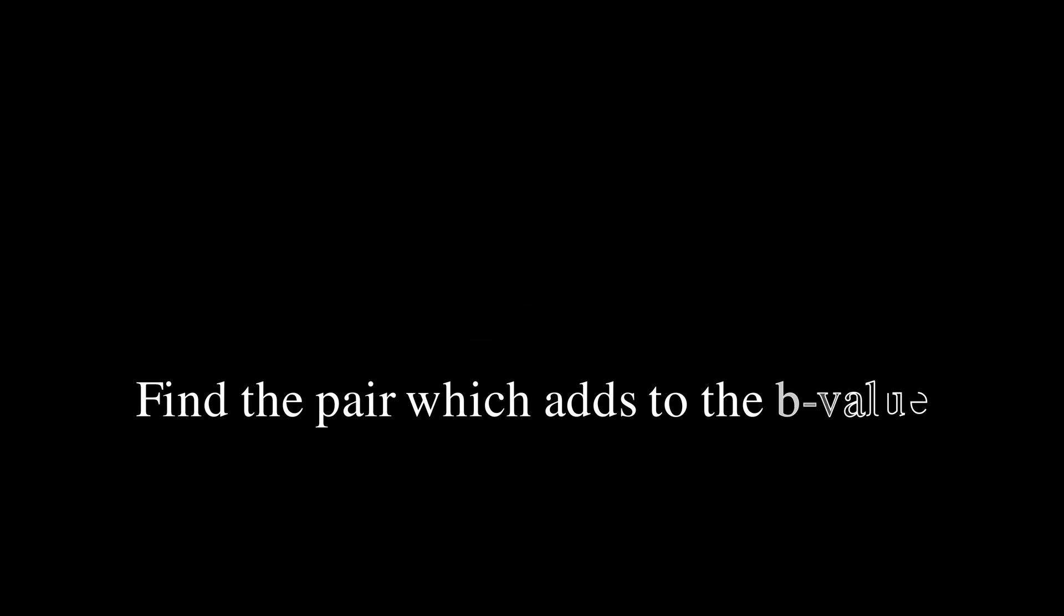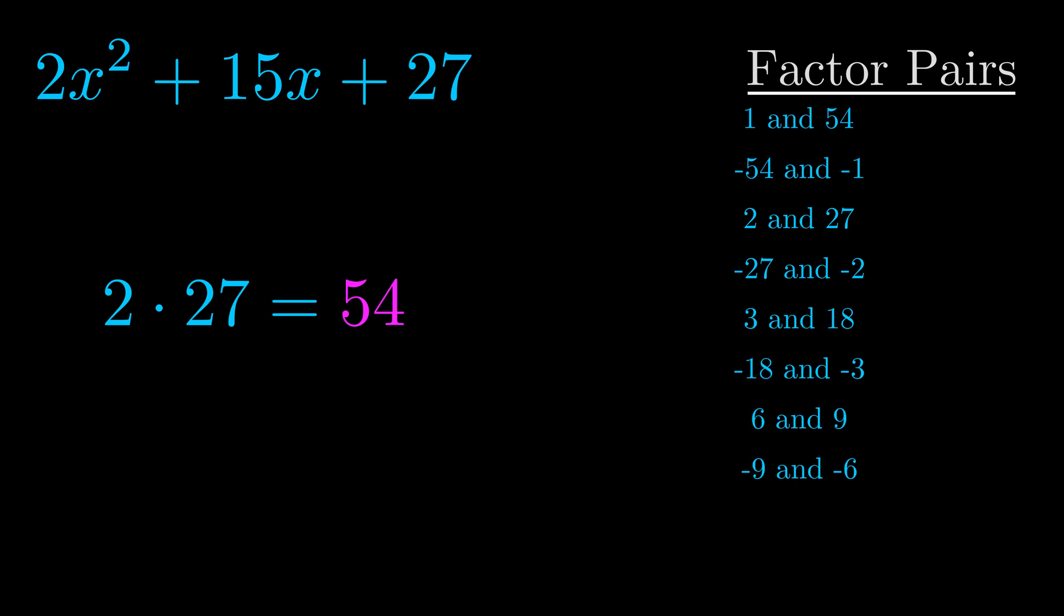The b value is the coefficient on the x term. That's the middle term, the one that we haven't done anything with yet. And really this is the only factor pair that we need.